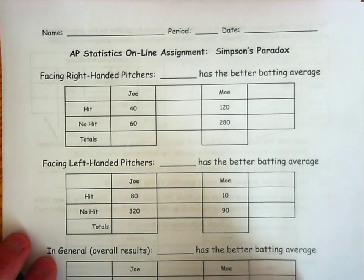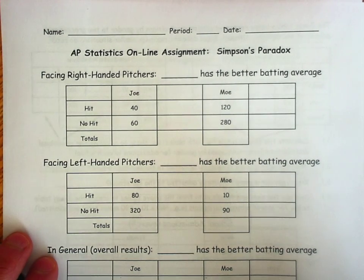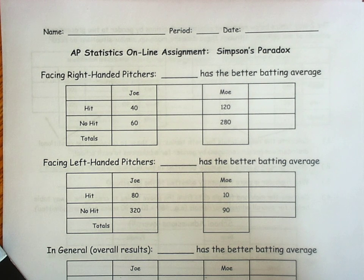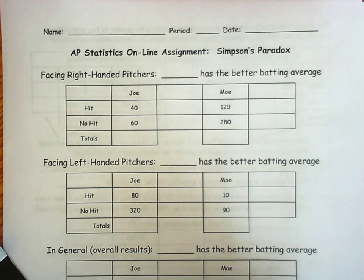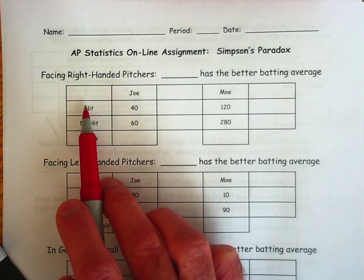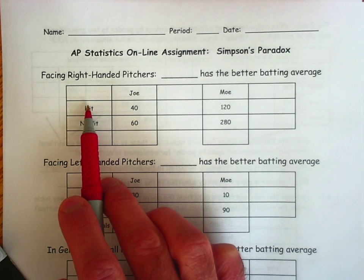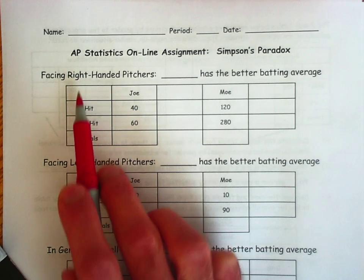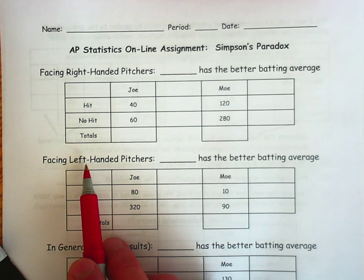Hi there. Let me take a few minutes and take you through this example of some two-way tables where we actually see a paradox occur. So let's look at some baseball players and let's look at how well they bat facing right-handed pitchers versus facing left-handed pitchers.